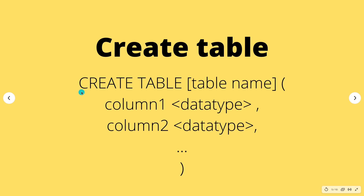Type 'CREATE TABLE' followed by the table name — for example, 'sales'. Then add brackets and inside put your column definitions. For column one, I'll put 'name_of_customer' with data type VARCHAR. For column two, I'll put 'email_addresses' also with data type VARCHAR.